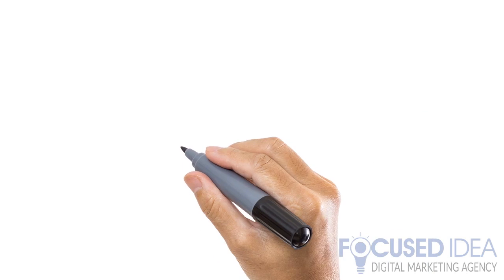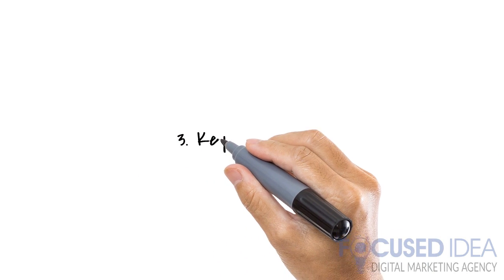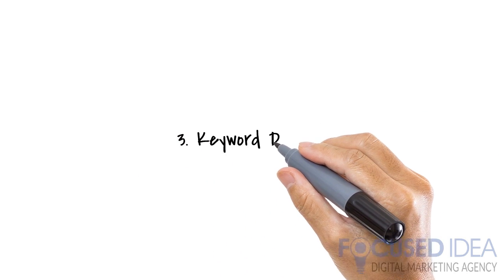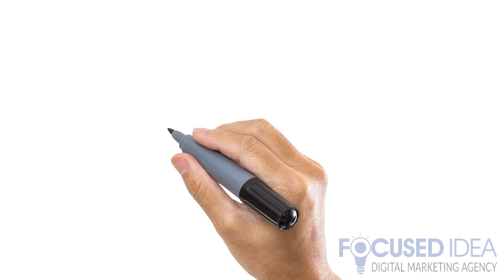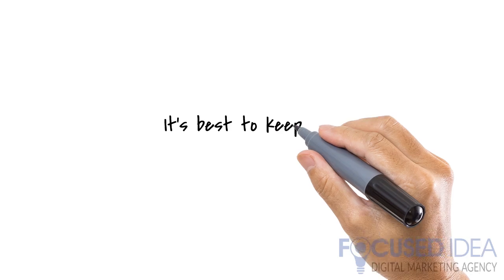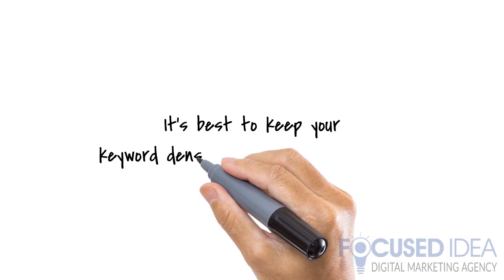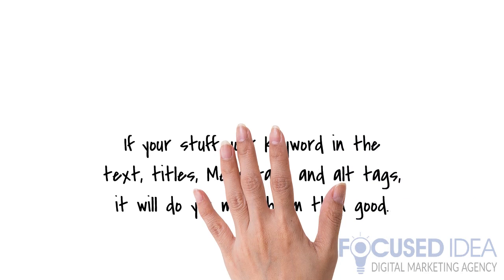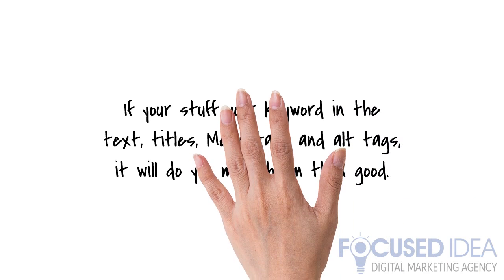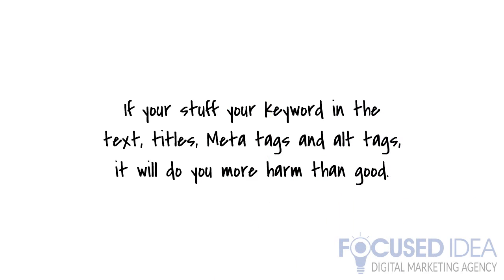3. Keyword Density. It's best to keep your keyword density low at about 3%. This means that your keyword should appear no more than three times for every 100 words of text. If you stuff your keyword in the text, titles, meta tags, and alt tags, it will do you more harm than good.